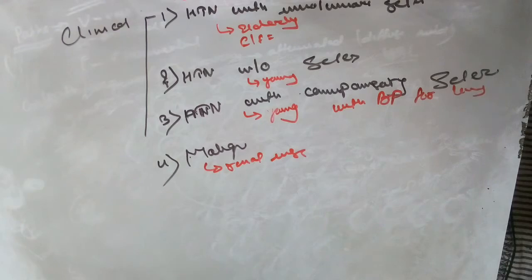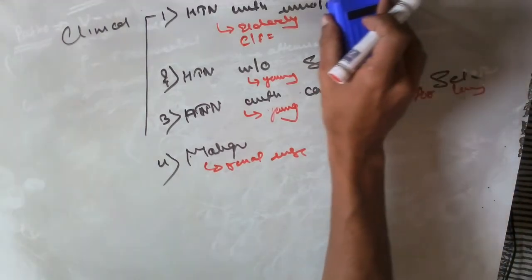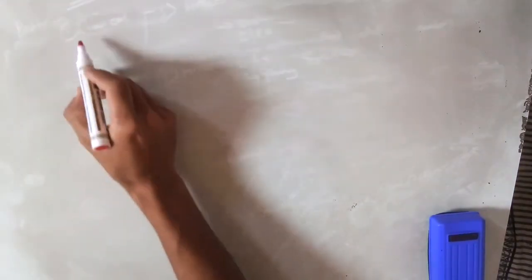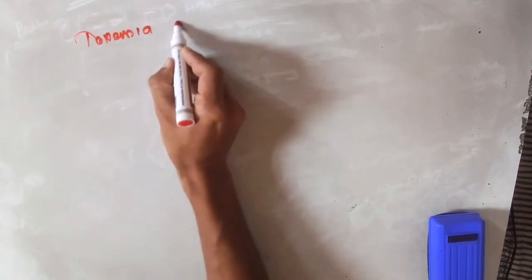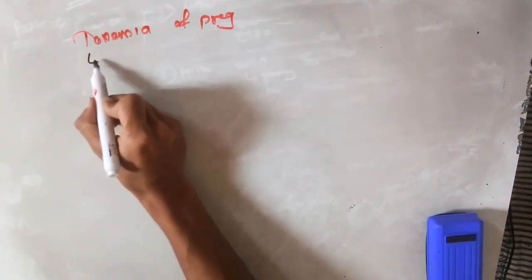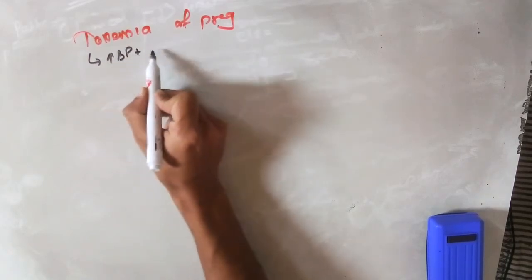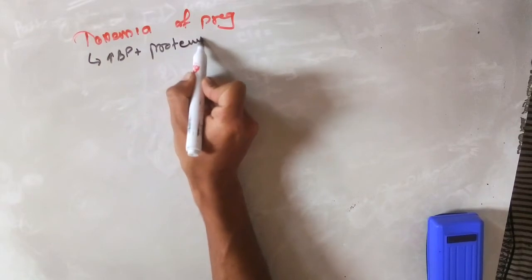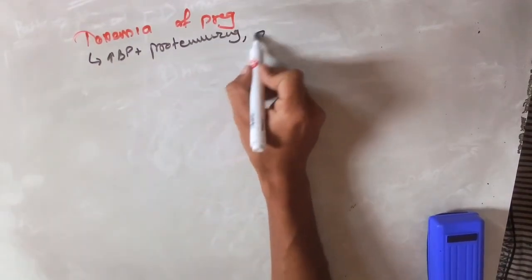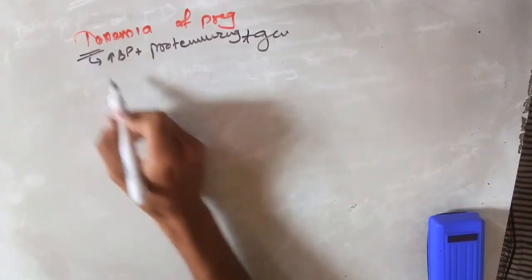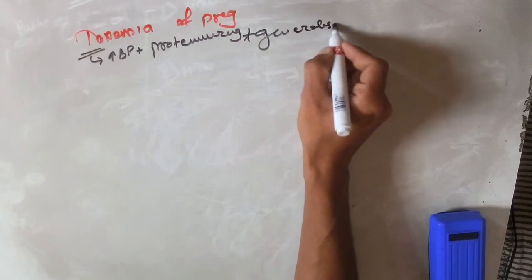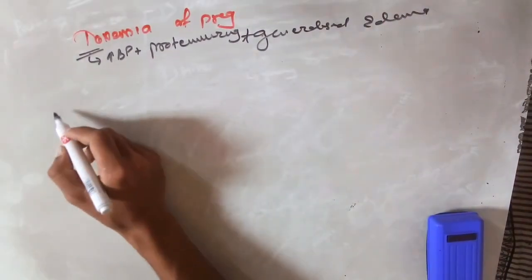When hypertension is seen in a pregnant woman, it is known as pregnancy-induced hypertension or toxemia of pregnancy. Toxemia of pregnancy is not just a single increase in BP — it has three associated symptoms: raised blood pressure, proteinuria in the urine, and generalized edema.